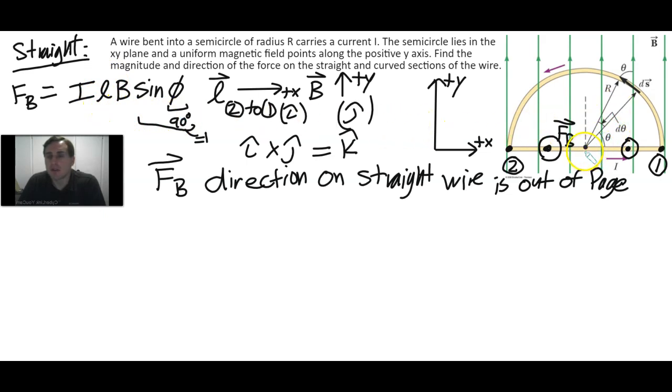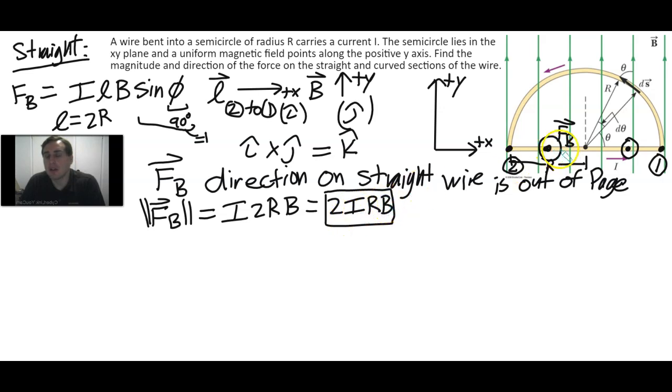One last thing we haven't determined is what is L. If this is a semicircle then this distance would be R from the center to 2 and also from the center to 1. So L is equal to 2R. F sub B should have a magnitude for the straight wire of I times 2R times B. That's 2IRB out of the page. That takes care of the straight wire.